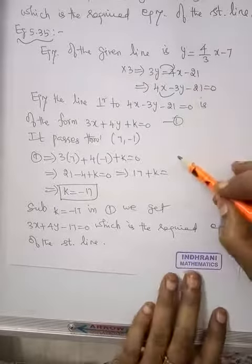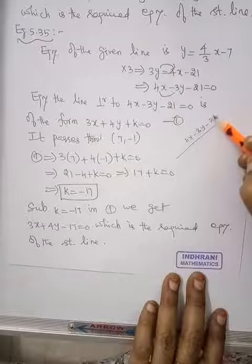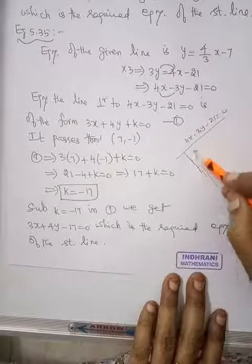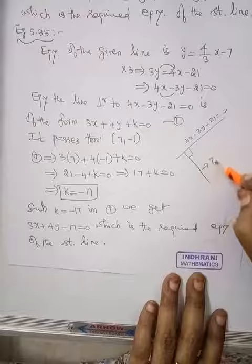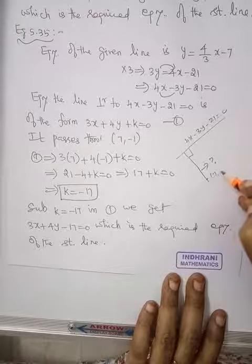For this line, the line perpendicular to 4x minus 3y minus 21 equal to 0, which is passing through point 7, minus 1.